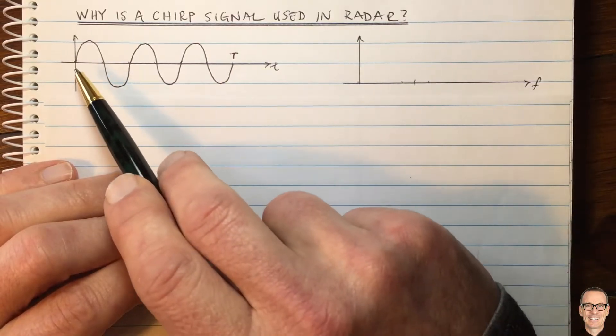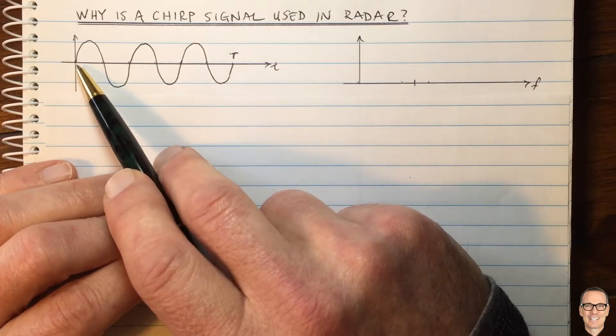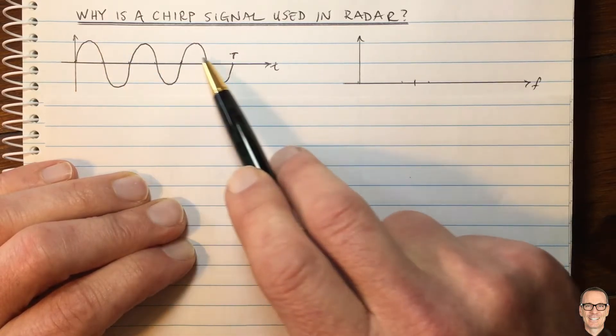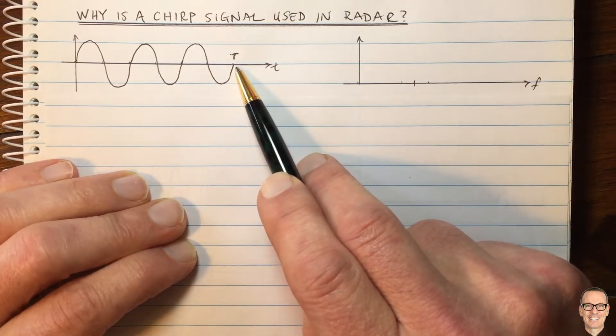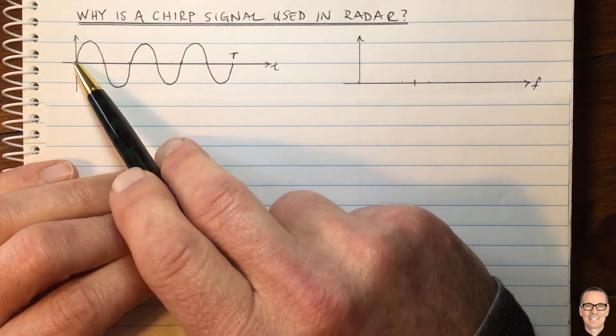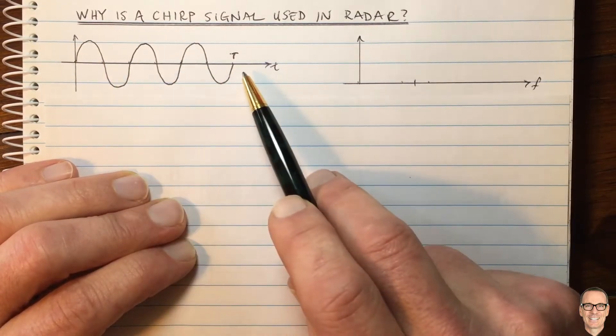It then has to determine from the bounce back the delay, the round trip delay to the target. And that can be challenging when the bounce back comes back with a low power and when there's noise. You need to be able to match up the transmitted signal with the received signal and find the delay offset.